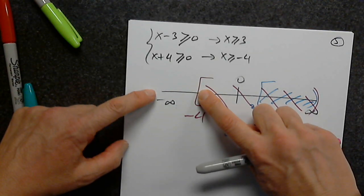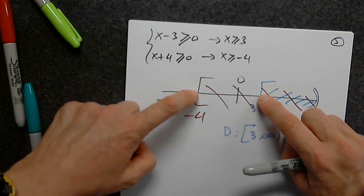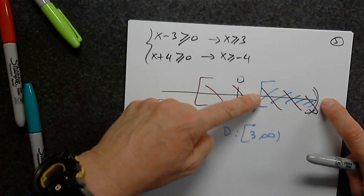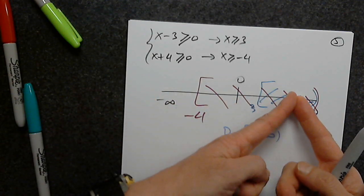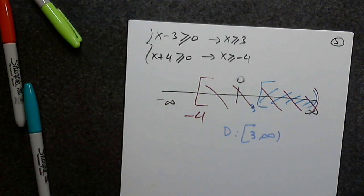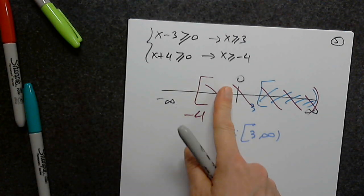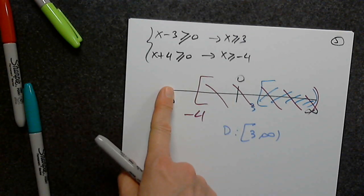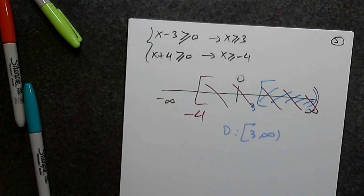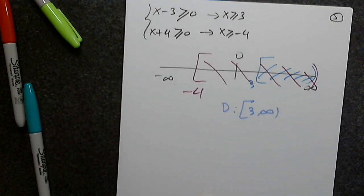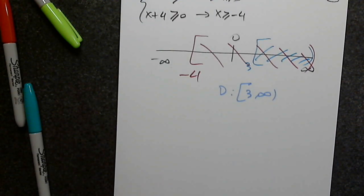Here, none of the conditions are met; here, only one. Obviously in the overlapping region, both are present — both colors. If I choose a number in that region, both functions will exist. If I choose a number where only one color is present, only one function exists. If I choose a number where neither is present, nothing.